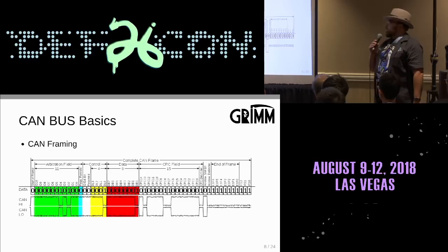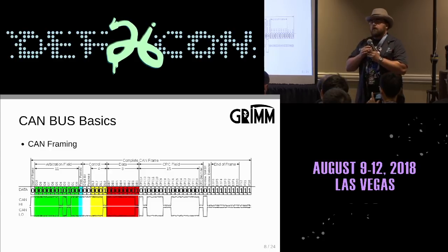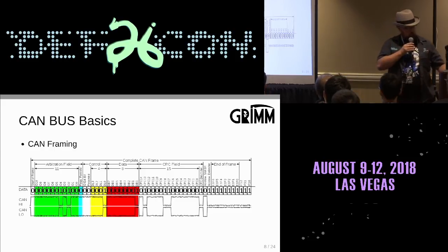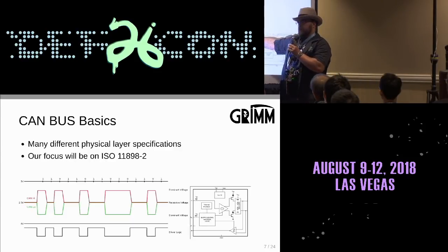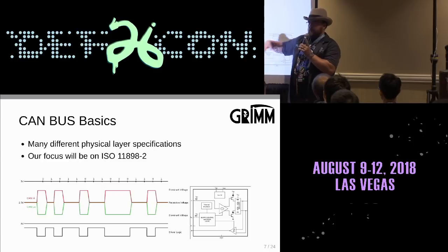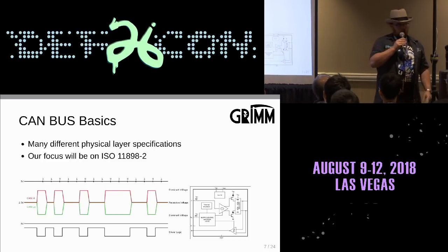Something important to keep in mind is one of the core fundamental principles of CAN bus: if any node on the bus is sending a 0 — sending a dominant voltage — then that will be the state of the bus. The only time the bus will be in a recessive state is if every node on the CAN bus is sending the recessive state, sending a 1 to the bus.